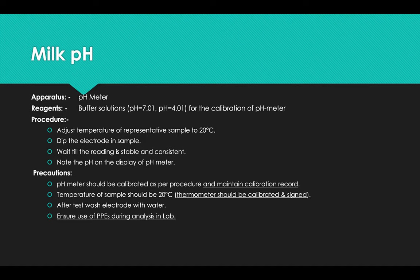To determine pH of the milk, all we need is a pH meter and buffer solution of pH 4 and pH 7 for pH meter calibration. First, adjust the temperature of representative sample to 20 degrees C. Then dip electrode in the sample. Wait till the reading is stable and consistent. Note the pH on the display of the pH meter. pH meter should be calibrated as per the procedure and maintain a calibration record. Temperature of the sample should be 20 degrees centigrade. After the test, wash electrodes with water.